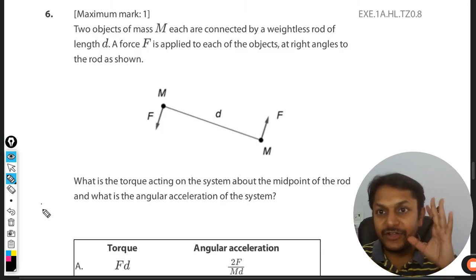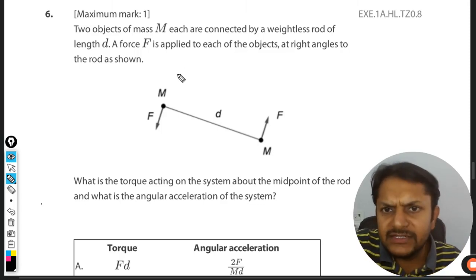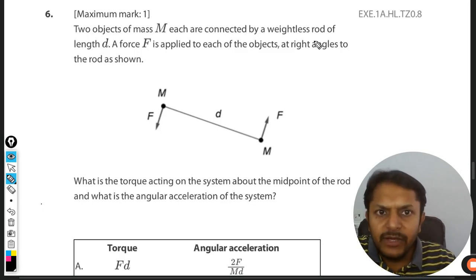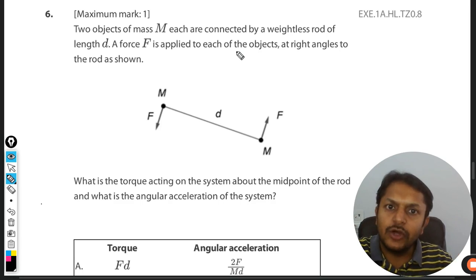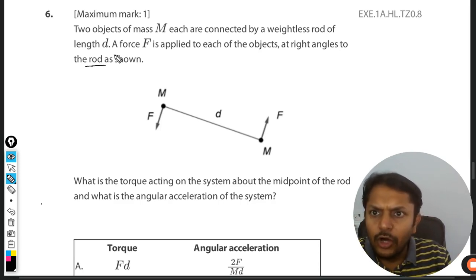Okay, yesterday let's see what is there in this question. Two objects of mass capital M are connected by a weightless rod of length d. A force F is applied to each of the objects at right angles to the rod. Okay, this is a rod.